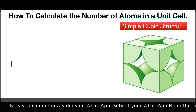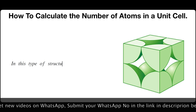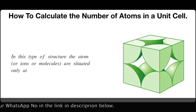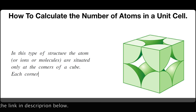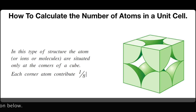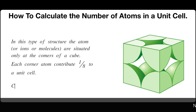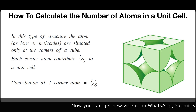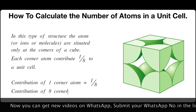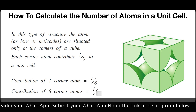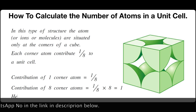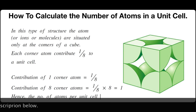Simple cubic structure. In this type of structure, the atoms, ions, or molecules are situated only at the corners of the cube. Each corner atom contributes one-eighth to a unit cell. So the contribution of one corner atom equals one-eighth. Therefore, the contribution of eight corner atoms equals one-eighth times eight, which comes to one. Hence, the number of atoms per unit cell in a simple cubic structure is one.